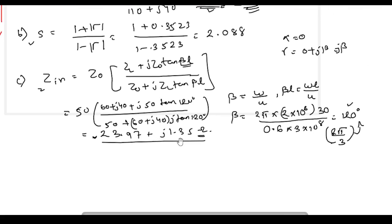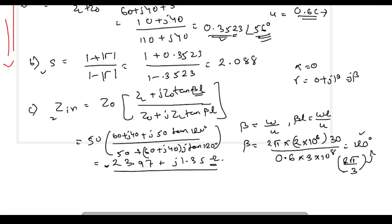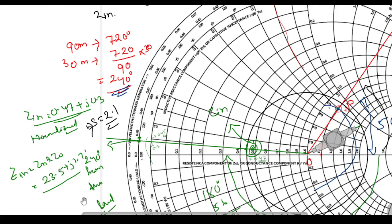Comparing with the formula: we got approximately the same values, near about — this is an approximation so slight differences are expected. This is the answer to part (c). This is how we solve the Smith Chart problem. In the next video we will work on another problem, and at some point I will also explain what the Smith Chart is and how to use it.